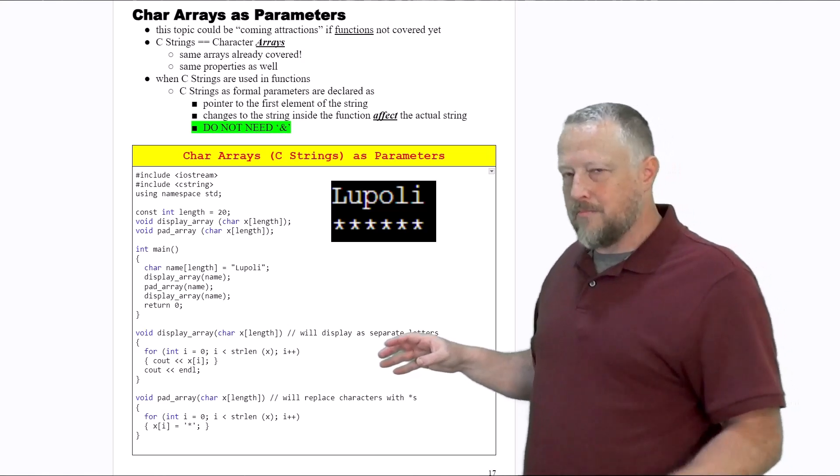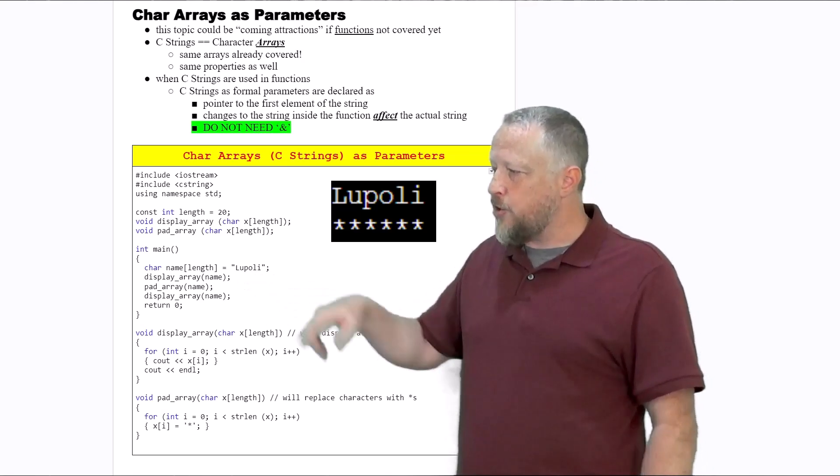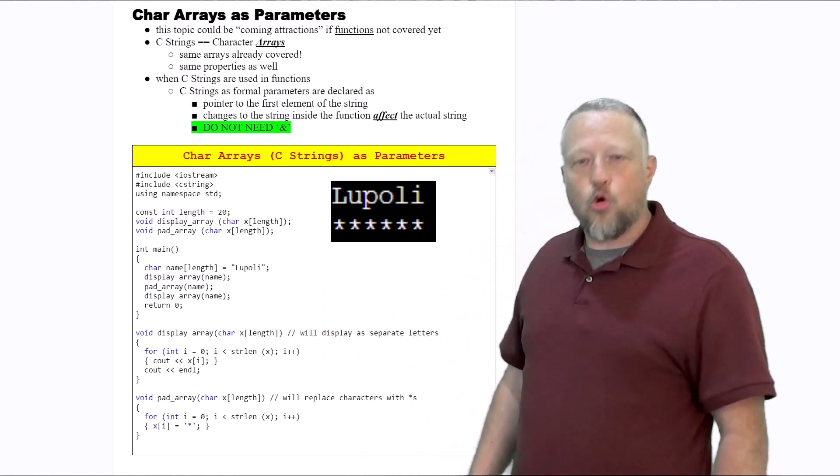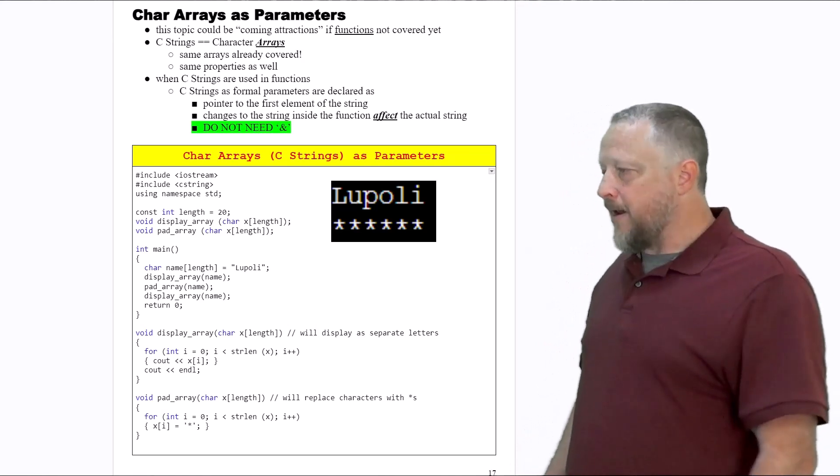So that's part one. Hopefully you got all that. The next part: I am then, after I've displayed it, going to use the pad_array. And that's this last one down here that has the blinky dot on there.